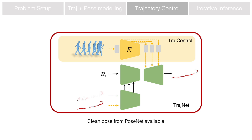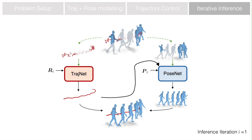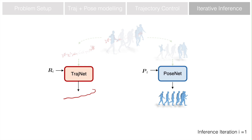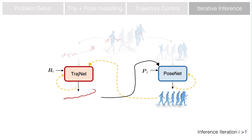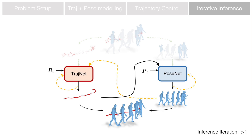Leveraging the trajectory control, we propose an iterative inference schedule for motion refinement. At the first inference iteration, the motion is reconstructed from the noisy and occluded input. In the following iterations, the trajectory net leverages the body pose and further refines the global dynamics conditioning on the prediction from the previous inference iteration. Based on that, the pose net refines the local body pose. The motion plausibility is iteratively refined by incorporating the trajectory-pose interdependencies. Empirically, we find two iterations are already sufficient.